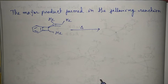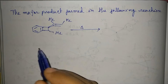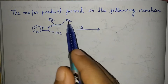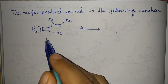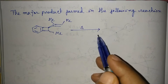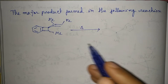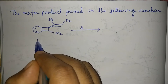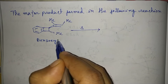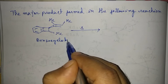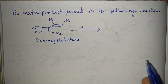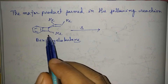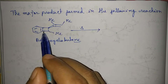We are discussing a GATE 2015 question paper. The next question asks for the major product formed in the following reaction. This is a benzocyclobutene derivative. When it is heated, it will undergo an electrocyclic ring opening reaction.